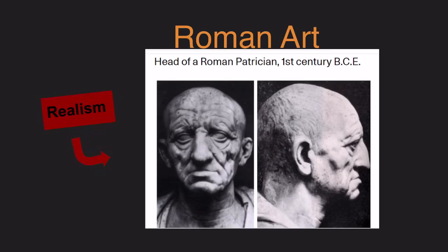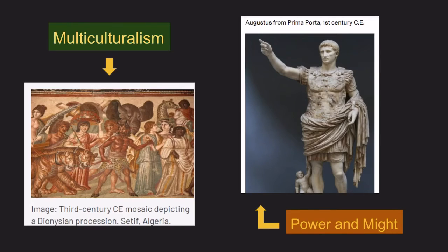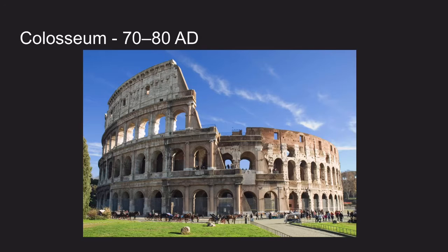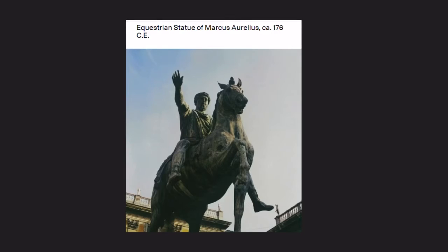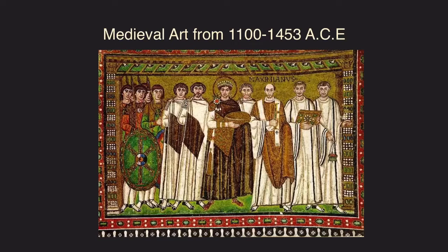Next we have Roman art from 146 BCE to 313 AD. Its characteristics are realism, multiculturalism, and themes of power and light. Some recognized architectural works are the Colosseum, mosaics, equestrian statues, and frescoes.